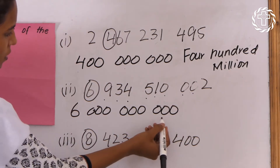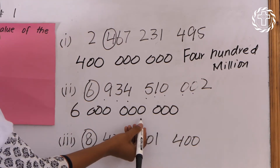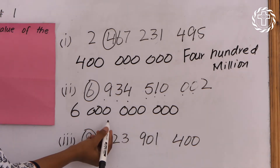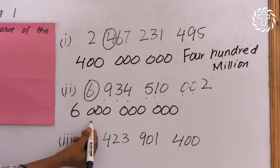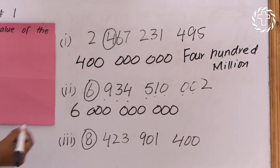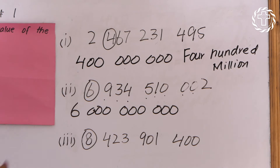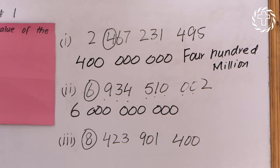Unit, tens, hundreds, thousands, ten thousands, hundred thousands, million, ten million, hundred million, billion. So the place value of this ringed digit is billion — we will say that this is six billion.